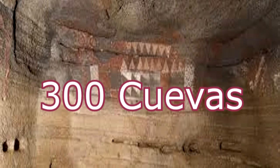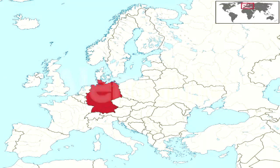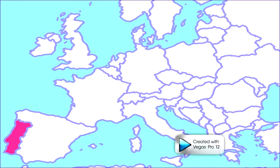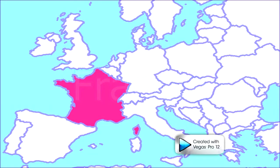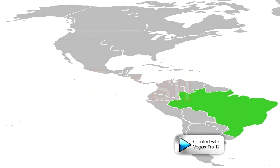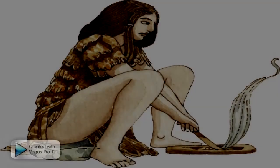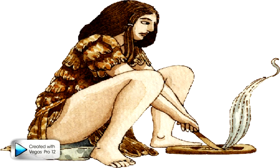Se encontraron alrededor de 300 cuevas pintadas repartidas en los países de Alemania, Portugal, España, Francia y, sorprendentemente, en Brasil, donde se representaban a dioses y animales. En esta época se desarrolló también el matriarcado, que era el poder de la mujer sobre los hombres. Ella era la jefa del hogar por su habilidad de procrear, alimentar a sus hijos y recoger objetos útiles para el clan.